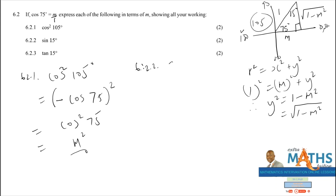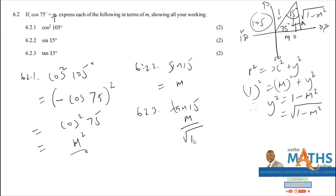For 6.2.2: sin 15°. Since 75° + 15° = 90°, looking at the diagram with angle 15° as the third angle, the opposite side of 15° is m and hypotenuse is 1. So cos 15° = m. For 6.2.3: tan 15°. With 15° as the angle, opposite is m and adjacent is √(1 - m²). So tan 15° = m / √(1 - m²).